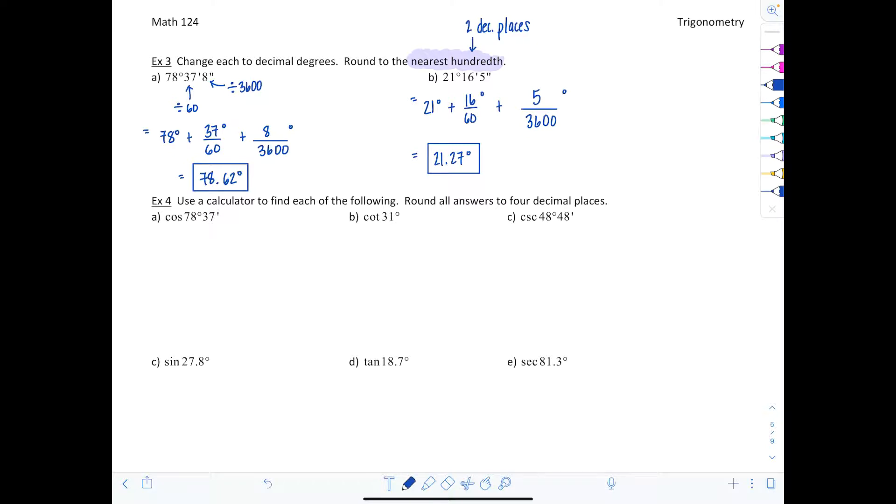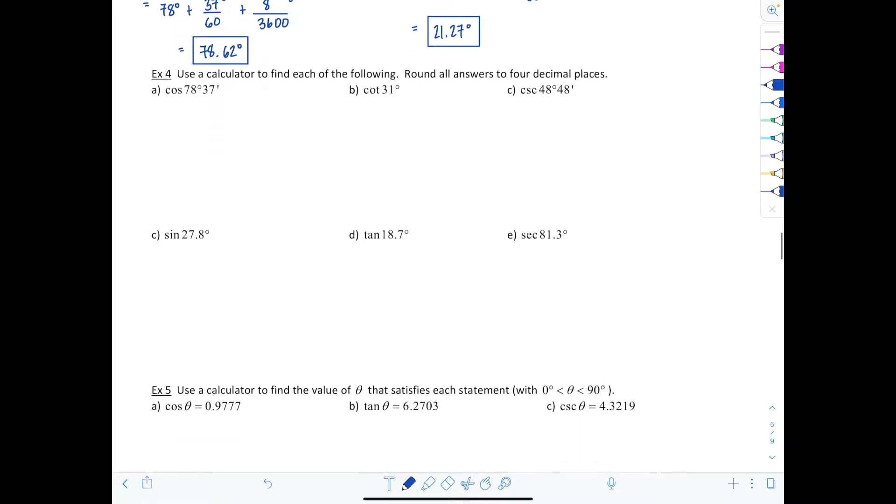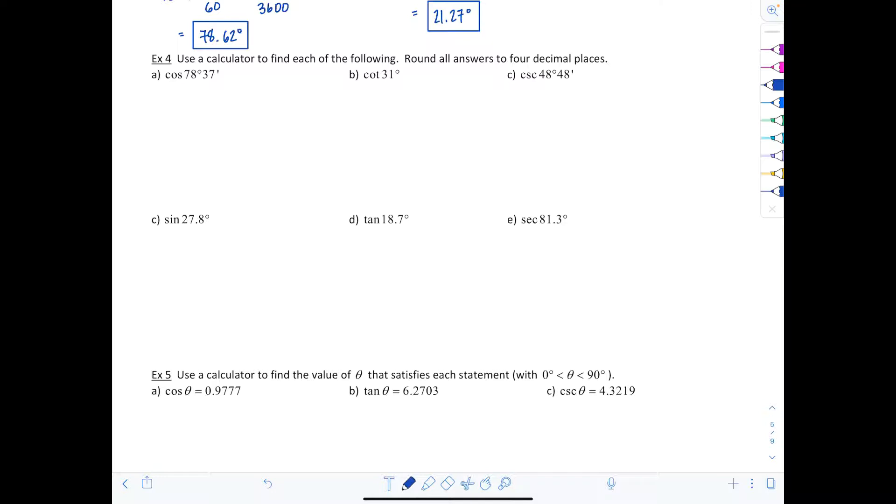Now we're going to work with our calculators a little more for the following, and it's instructing us to round all answers to four decimal places. First we're going to find cosine of 78 degrees and 37 minutes. You might notice in your calculator, I have a TI-30X2S, there's a button above sine, cosine, and tangent with a degree sign and tick marks. So I can choose whether I'm entering in degrees and minutes or seconds.